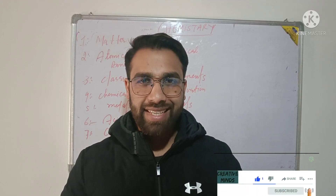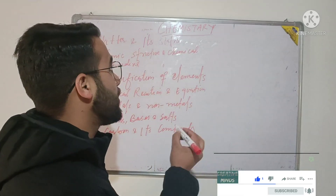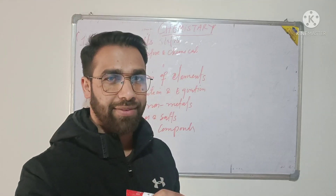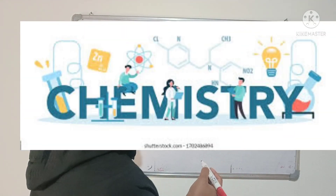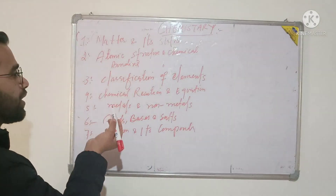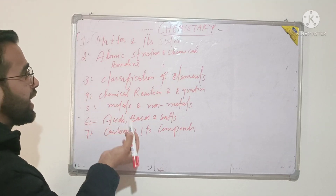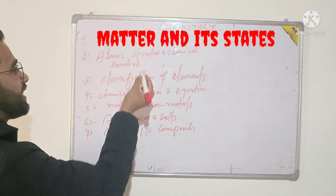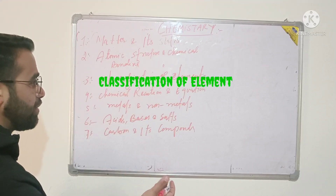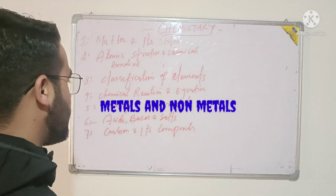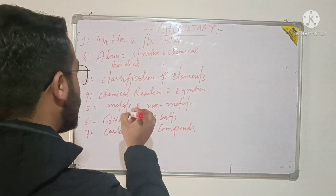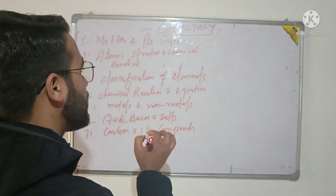Welcome to all of you. This is the second lecture in the series of Basic Sciences Physics. Today we are going to study chemistry. There are seven important topics in chemistry: matter and its states, atomic structure and chemical bonding, classification of atoms, chemical reactions and equations, metals and non-metals, acids bases and salts, and carbon and its compounds.